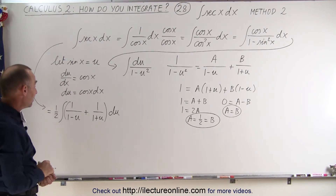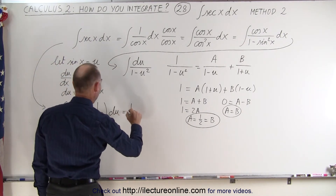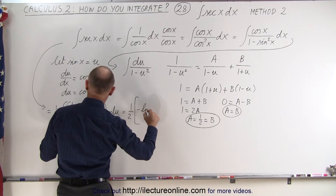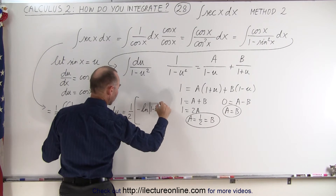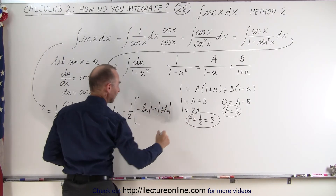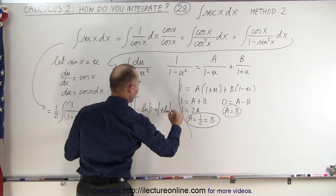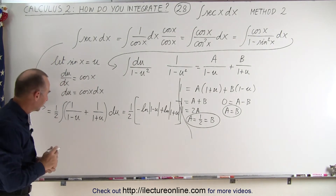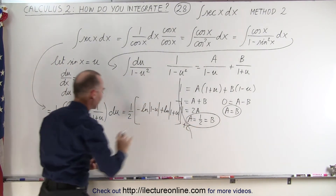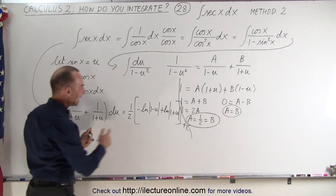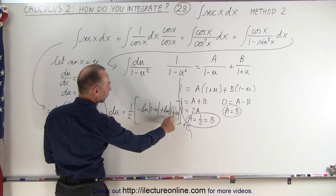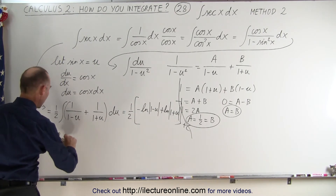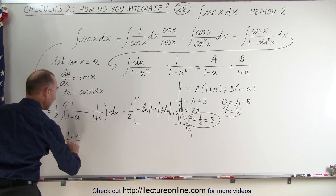That's easy to integrate. It becomes equal to 1/2 times negative the natural log of 1 minus u, plus the natural log of 1 plus u. If we reverse the order, we have the natural log of 1 plus u minus the natural log of 1 minus u. This now becomes 1/2 times the natural log of (1 plus u) divided by (1 minus u).